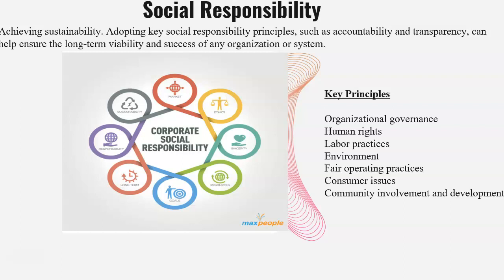Environment — when you're doing a business, you need to make sure that you're not polluting the environment. You should not be manufacturing something and disposing of waste improperly, or not taking care of drainage when there's leakage. You have to make sure there's no air pollution, no land pollution, and no water pollution. Fair operating practices — you cannot be unjust to one employee or investor just because you're favoring another. The operating principles need to be fair, one rule for everyone, without discriminating based on gender, race, or color.